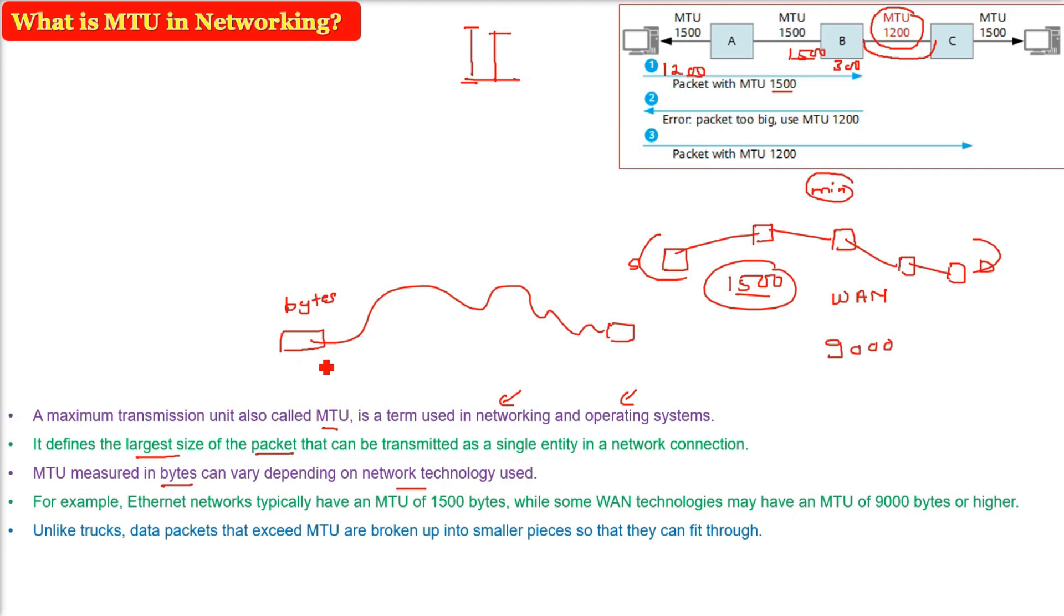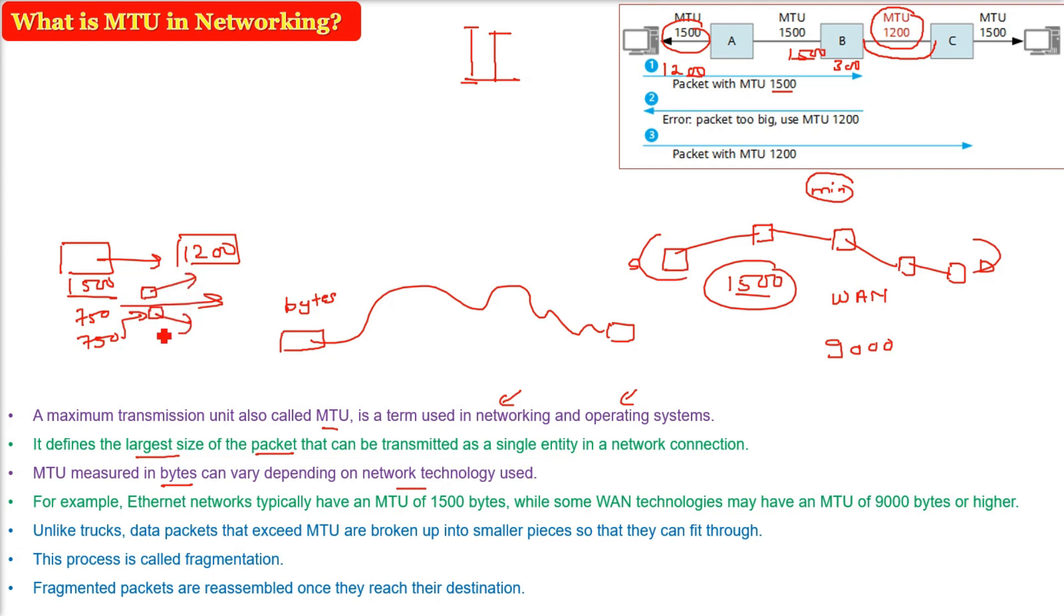Unlike this truck, data packets that will exceed the size of MTU have to be divided into pieces or broken up into smaller chunks so that they can actually fit through and pass on through all the network. In this case, 1500 where there is a blockage where 1200 only can pass, we will divide this 1500 into two parts: 750, 750. Since 750 is lower than 1200, there will be no problem.